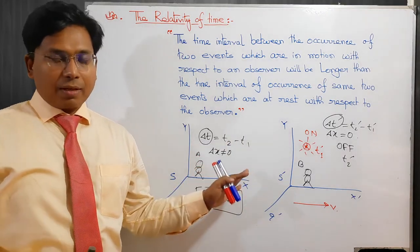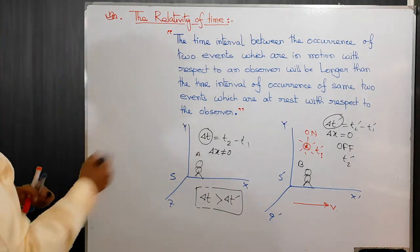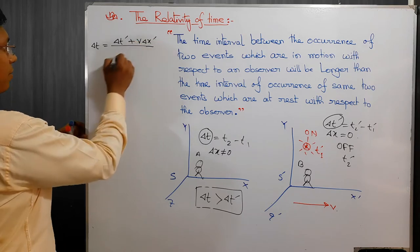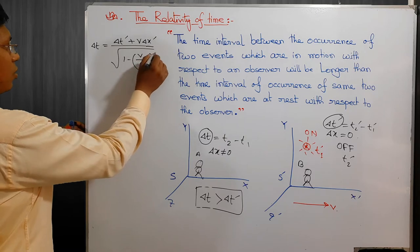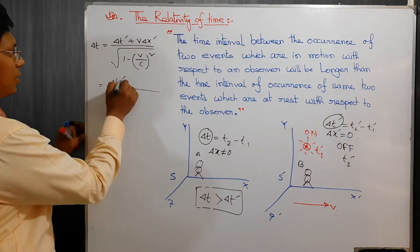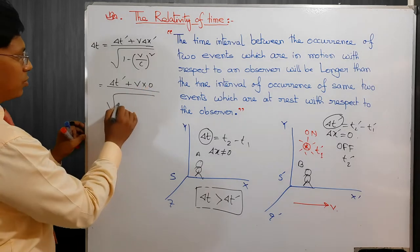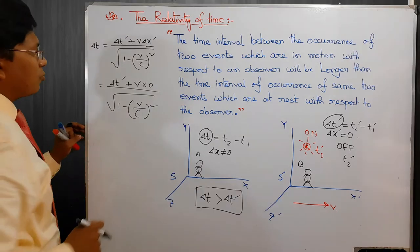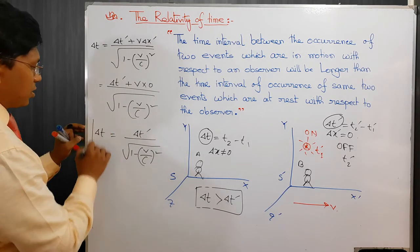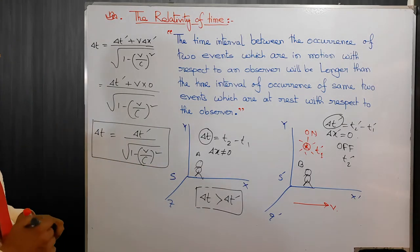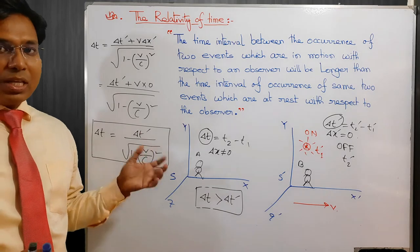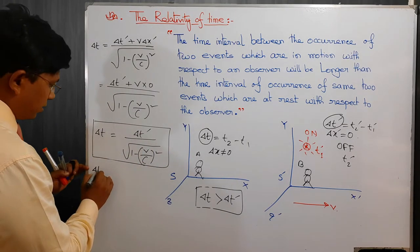We can express this phenomenon by using the Lorentz inverse transformation equation: del-t equals del-t-prime plus v times del-x-prime, all divided by the square root of 1 minus (v/c) squared. Here del-x-prime is zero, so we substitute that in. The equation simplifies, and we finally find that del-t equals del-t-prime divided by the square root of 1 minus (v/c) squared. This is the equation for the relativity of time.